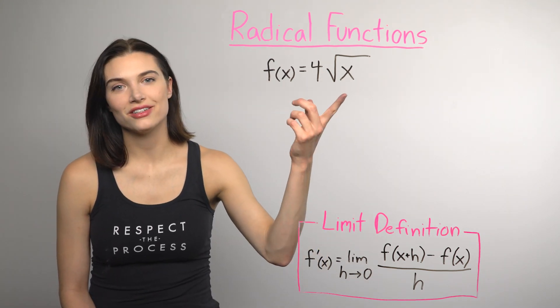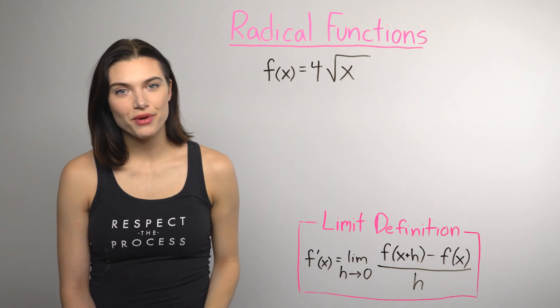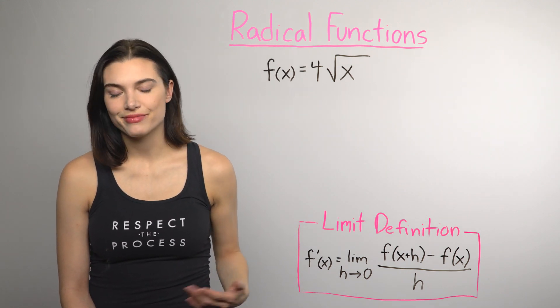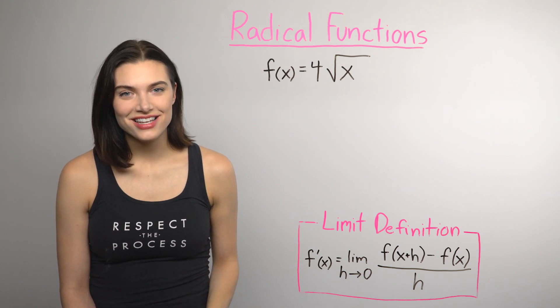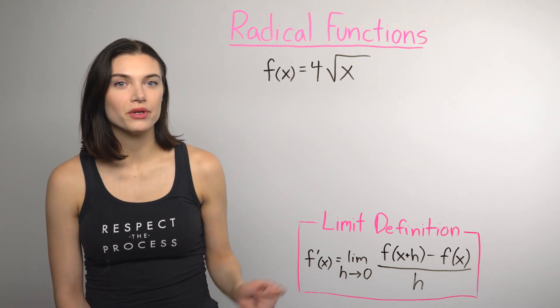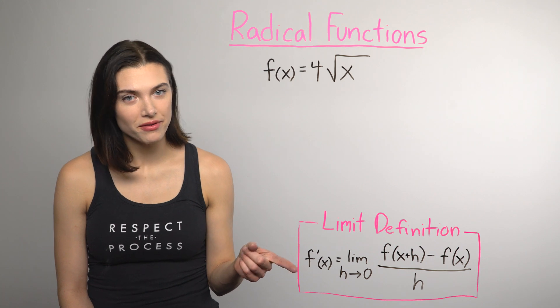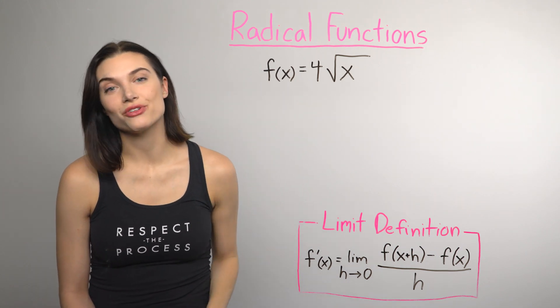So here's a function with a radical. If you're trying to find the derivative with the limit process, where do you start on something like this? Just like the other ones, I'm going to start by rewriting the limit definition of a derivative with the function we want the derivative for.